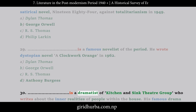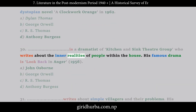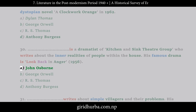Question 30: Who is a dramatist of the kitchen sink theater group who writes about the inner realities of people within the house, with famous drama Look Back in Anger (1956)? A. John Osborne. B. George Orwell. C. R.S. Thomas. D. Anthony Burgess.